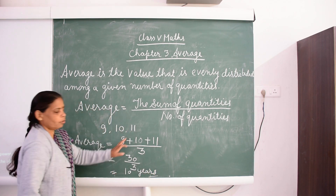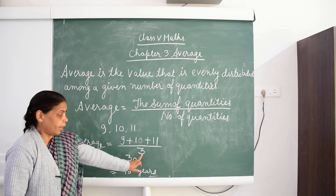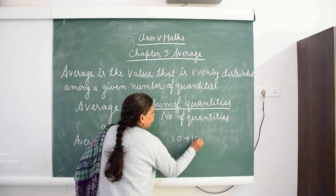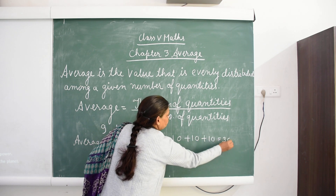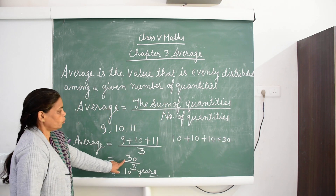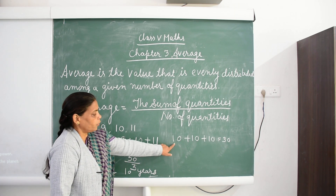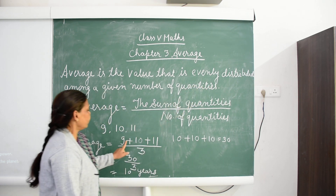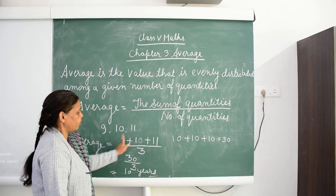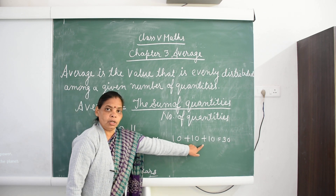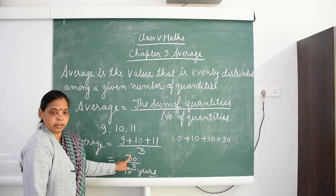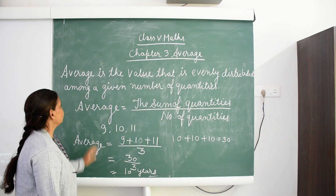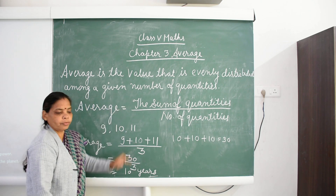The average age of Class 5 students is equal to 10 years. We can verify this: 10 plus 10 plus 10 is equal to 30, so average is equal to 10. This confirms that average is the value that is evenly distributed among a given number of quantities.